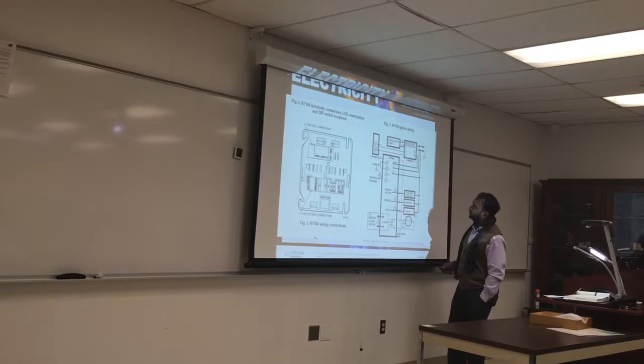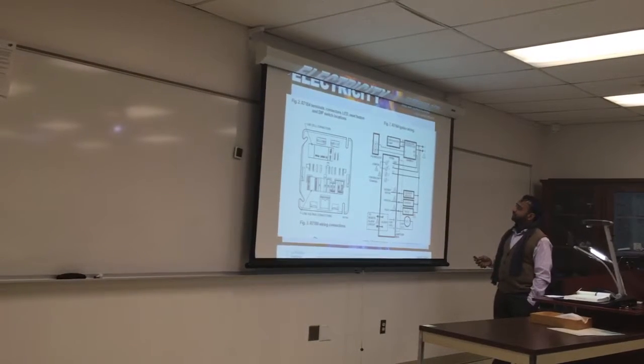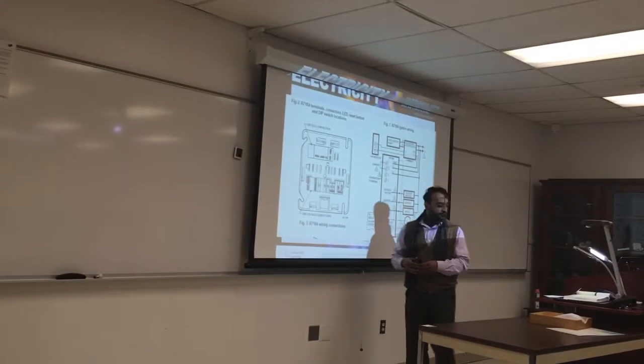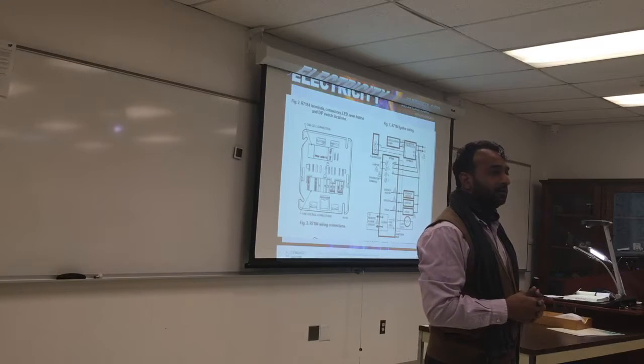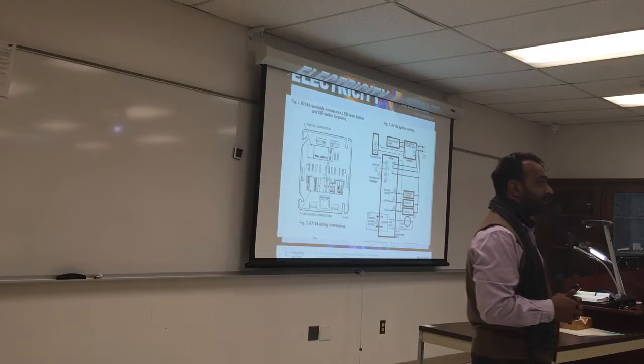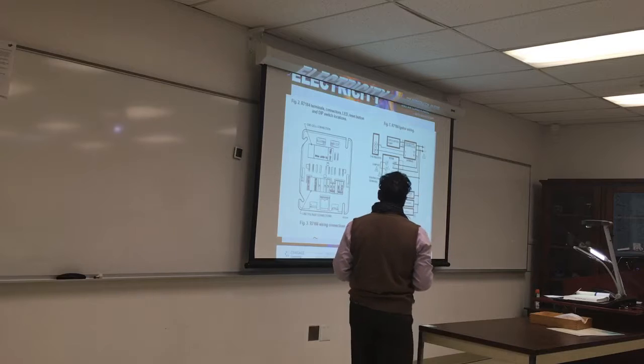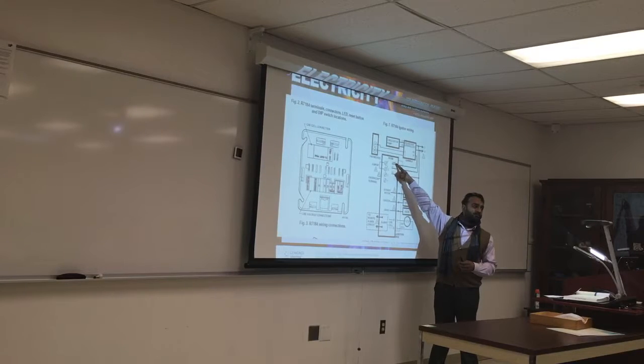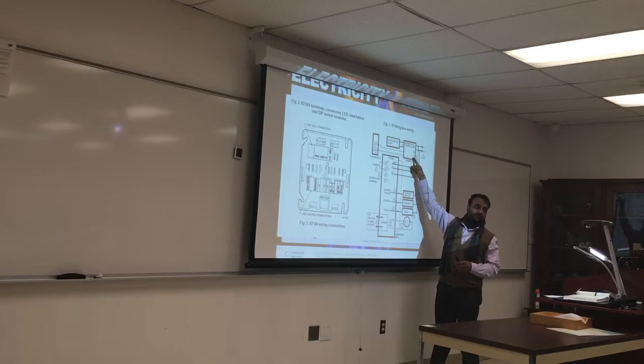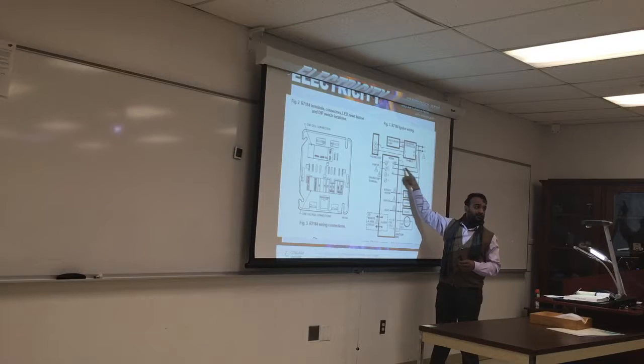So here we have how many components? There's a thermostat, there is a circulation pump, and there's also a primary control. So the primary control controls the burner and the flame. The aquastat controls the water temperature and circulating water inside the house.